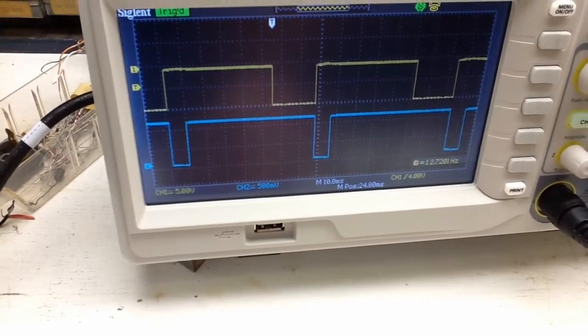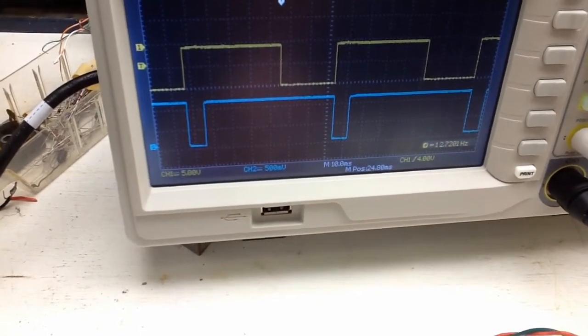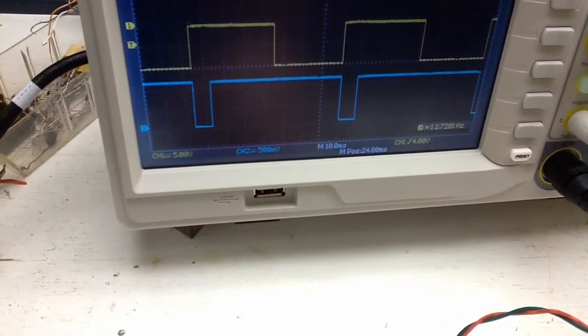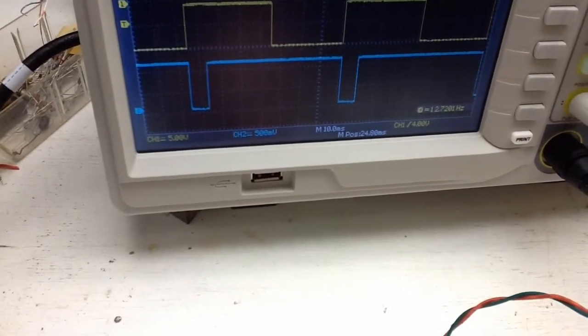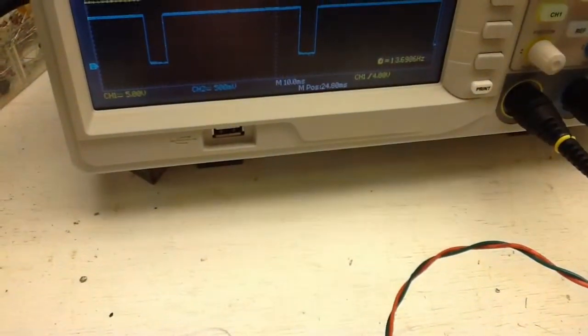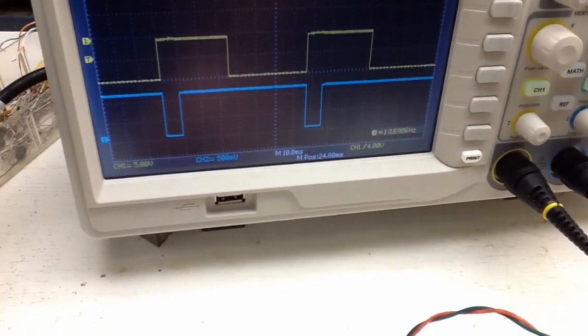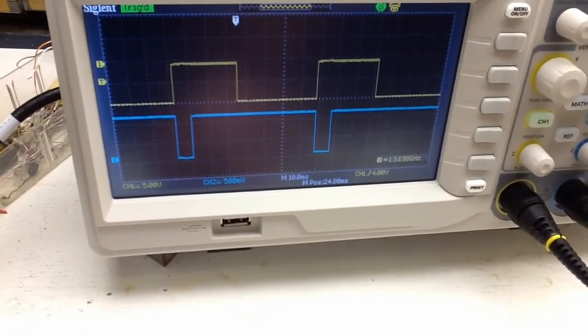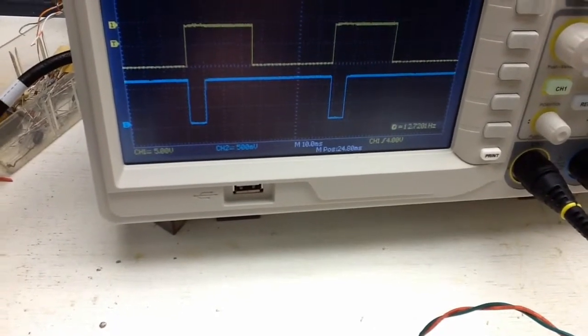Now if we want to go out to about 50 milliseconds, then here we are. Or if we want to go down to a shorter period. Let's see if I can get this turned. Here you can see the on period is about 30 milliseconds. It can go even shorter.